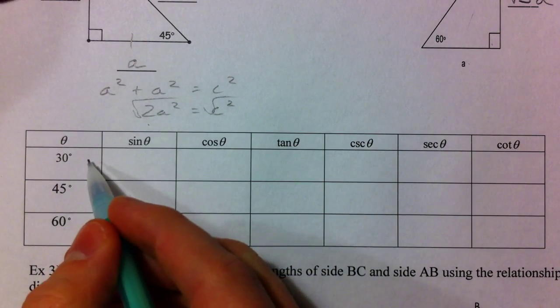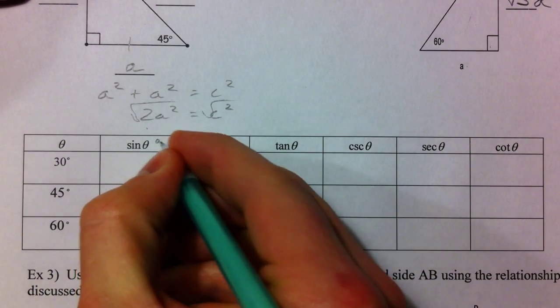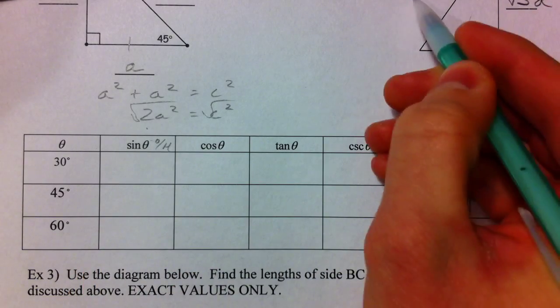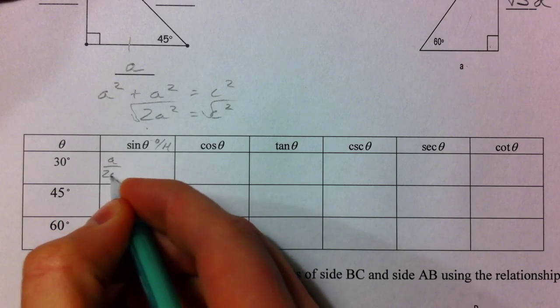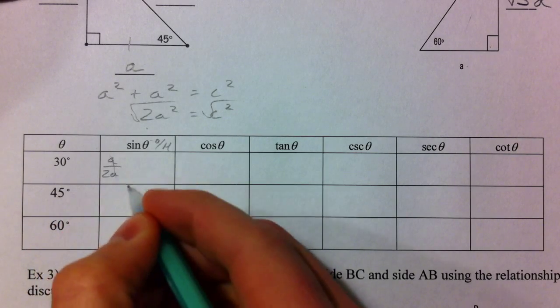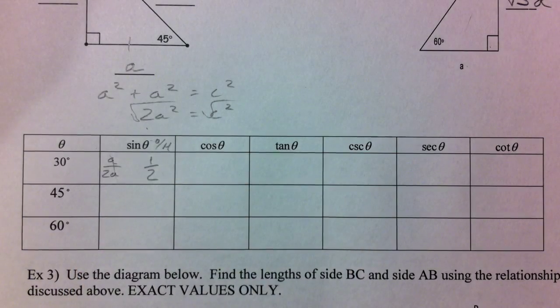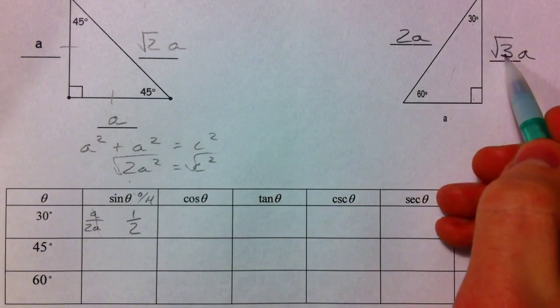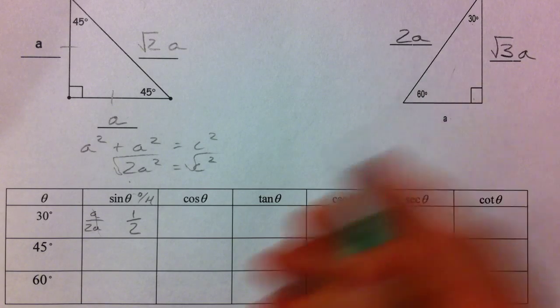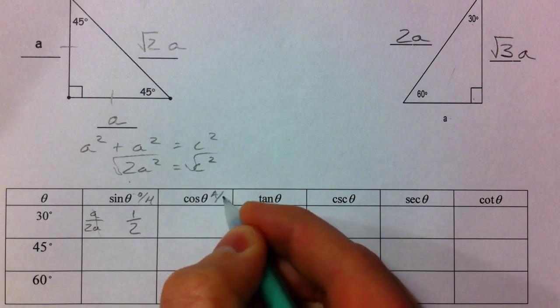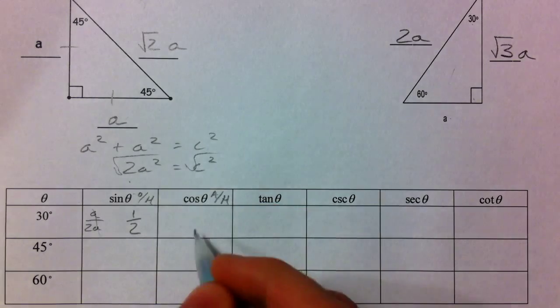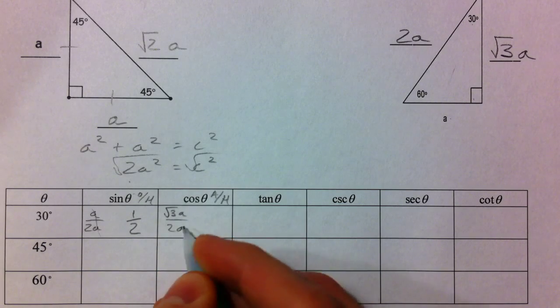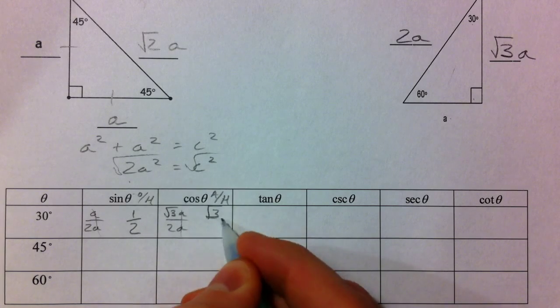So the sine of 30 degrees. Sine, opposite, hypotenuse. The so, right? Opposite is A over hypotenuse 2A. So the sine of 30 degrees, where the A's cancel out is 1 half. Cosine of 30 degrees. Still dealing with the same triangle. Cosine is the adjacent over the hypotenuse. And so adjacent, hypotenuse. So Ka. Knowing how to spell it's tremendous. Square root of 3 of A over 2 times A. And so again, the A's cancel out. You get square root of 3 over 2.